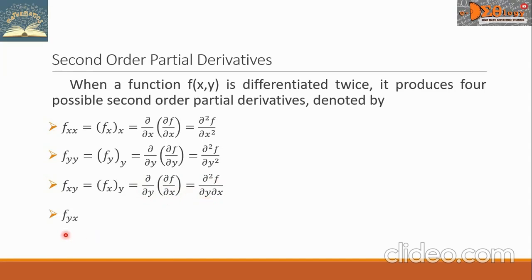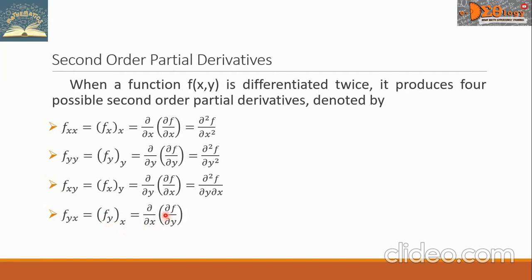The fourth one is f sub yx. This means we are going to take the partial derivative of the function f with respect to y, and then with a new function, we will take another partial derivative with respect to x. We write this as the second order partial derivative of f first with respect to y, followed by with respect to x.